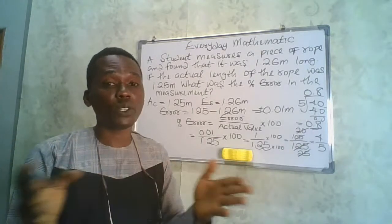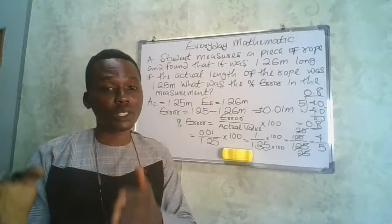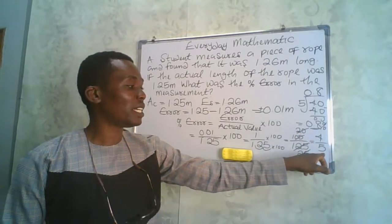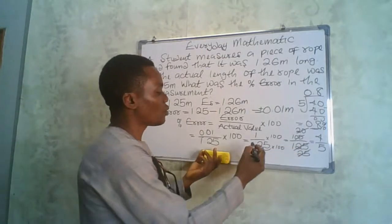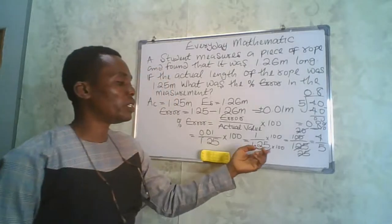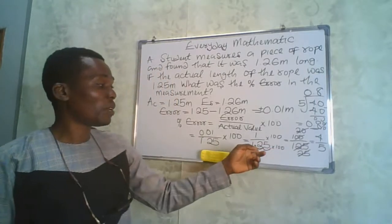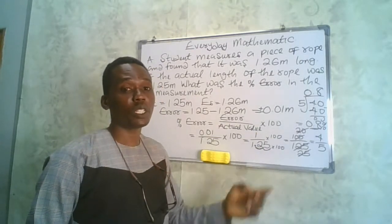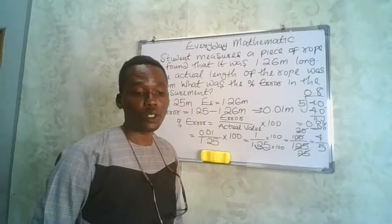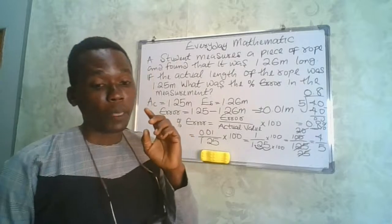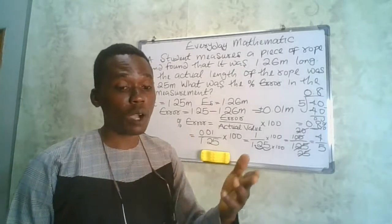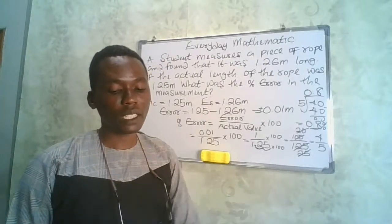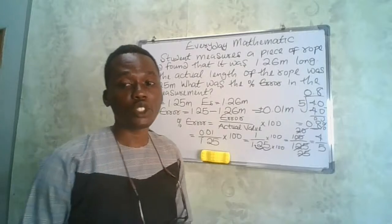In your JAM UTME exam these are the easier parts, so don't spend too much time on them. Just apply the formula, solve the answer quickly, and move on. In your exam you might see one or two or three questions on everyday mathematics from this section of number and numeration.